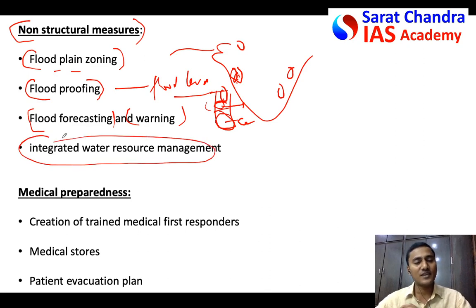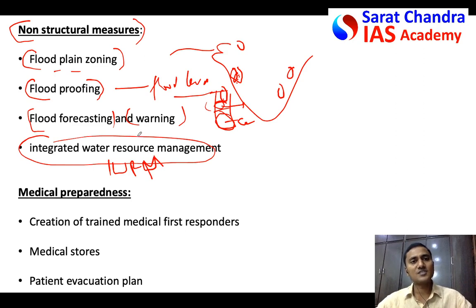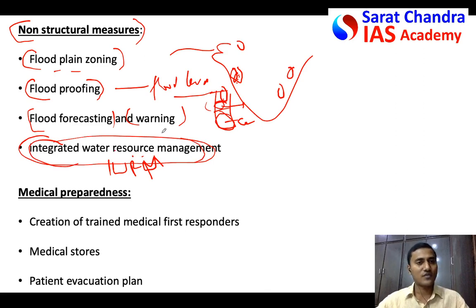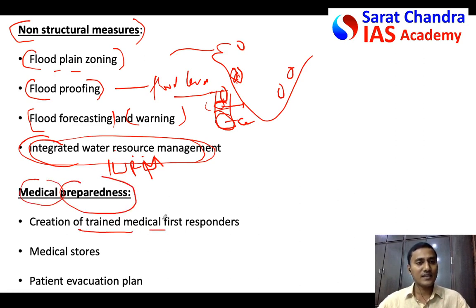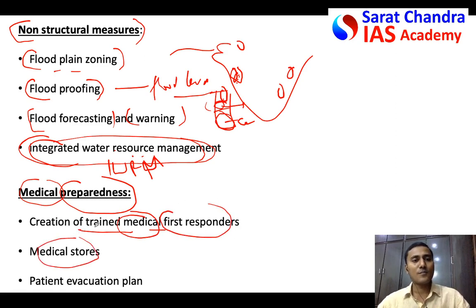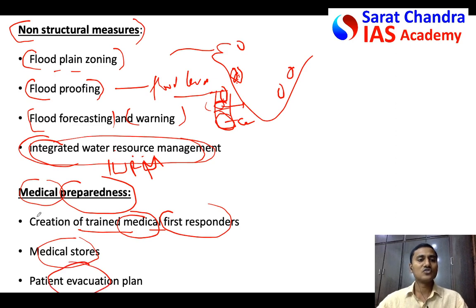Integrated Water Resource Management (IWRM) is a broad topic — just mention it. It looks at not only flood water but overall water management in cities, villages, and India as a whole, for agriculture, irrigation, and power development. Proper IWRM automatically reduces the effect of floods on people. In the preparedness section, also write about medical preparedness — training people in flood-prone areas to act as first responders, ensuring medical stores are equipped for flood-related health needs, and planning patient evacuation procedures.